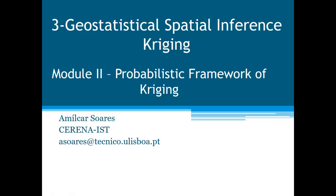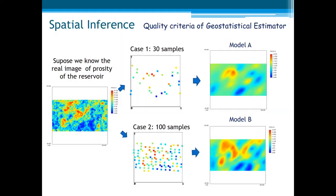This is the second module of the last section of this introductory course of geostatistics. As you are going to see, Kriging is the name of a large family of geostatistical interpolators, and this lecture is about the probabilistic framework of Kriging. In the last lecture we saw the properties which the geostatistical estimator had — the structural proximity and the clustering property.